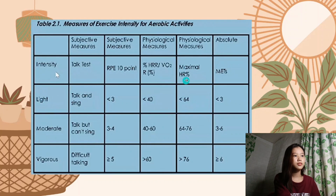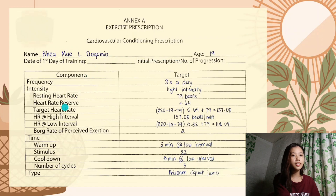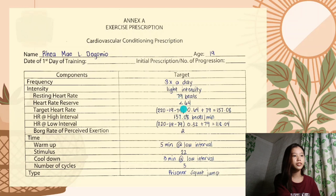For the maximal heart rate percent, since I chose light intensity, the value is less than 64 percent. For the target heart rate calculation: 220 is the constant number, minus 19 which is my age, minus 79 my resting heart rate, and multiplied by 0.64 — which I got by dividing 64 by 100.